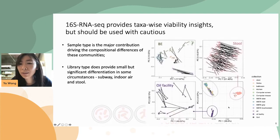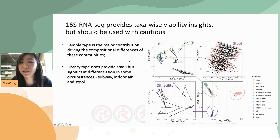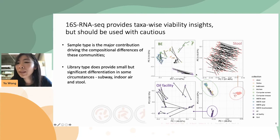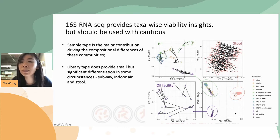However, when you zoom into similar sample types, library type does differentiate RNA from DNA libraries in some cases — such as the subway samples from the previous slides, the indoor air samples (the purple ones here), and the human stool samples. This agrees with our finding that 16S RNA-seq differentiates viable from whole communities in samples of similar origins.